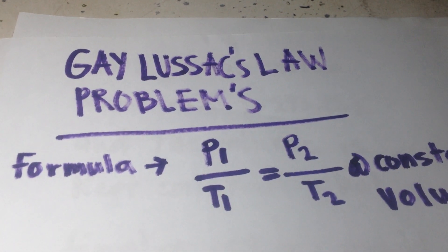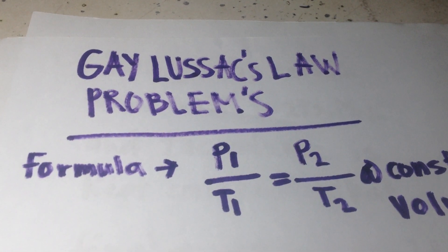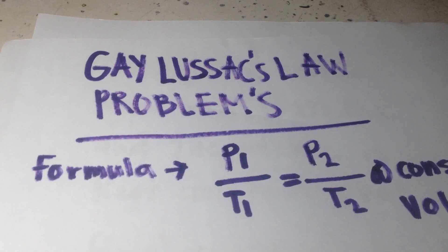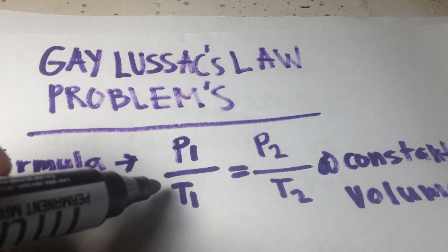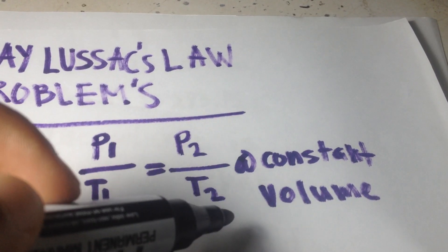Hello everyone, in this video we're going to solve Gay-Lussac's Law problems. Here is the formula: P1 over T1 equals P2 over T2 at constant volume.